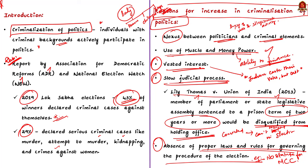The fifth important reason is the absence of proper laws and rules governing the procedure of elections. We know there is only the Model Code of Conduct (MCC) which is in operation during elections, and it is not enforced by any statute. These are the reasons or factors which have contributed to the increase in the criminalization of politics.